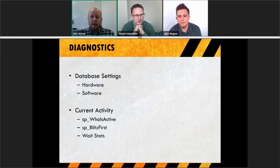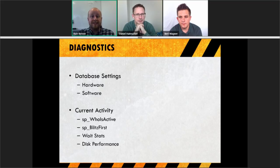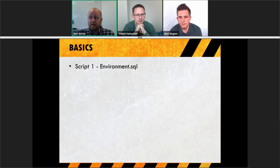We'll also look at wait stats on the server. There's a blog script I'll point you toward that helps tell you if you've got a specific CPU issue, an IO issue, or locking — it helps narrow things down further. Finally, we'll look at disk performance, whether you're on spinning rust or SSDs, and potential network issues will be picked up when you check how well your disks are performing.